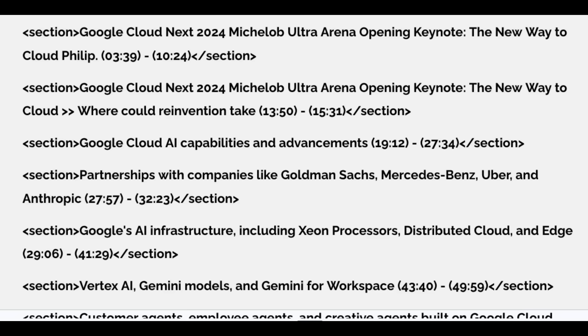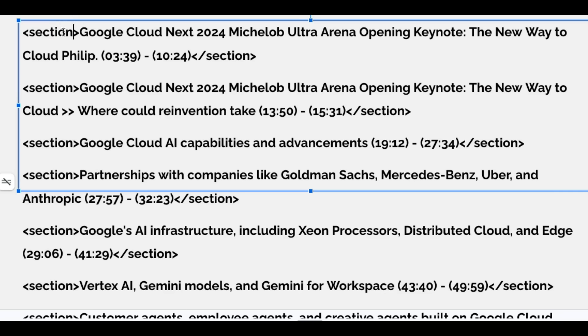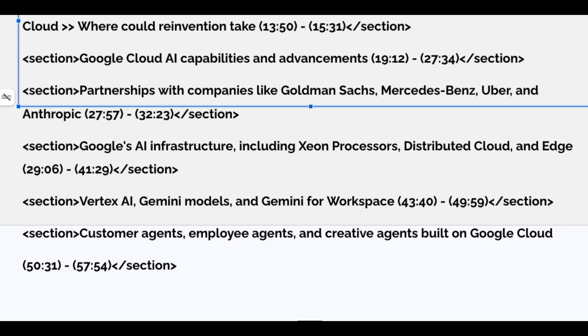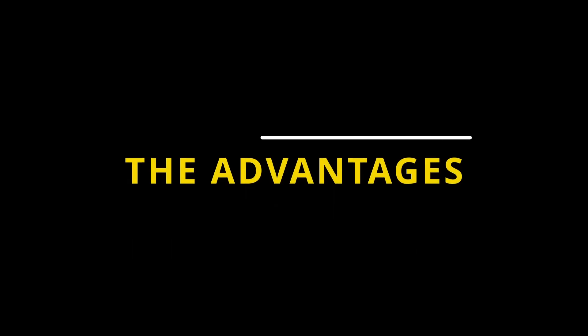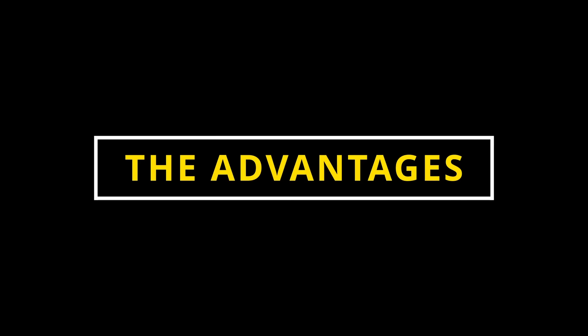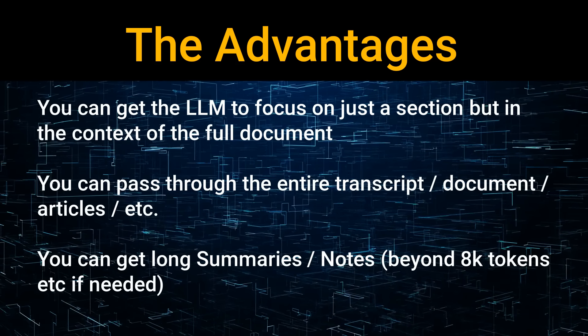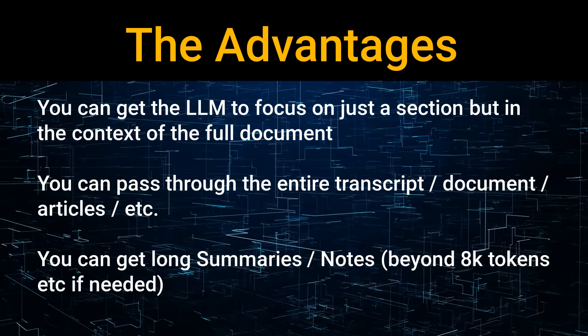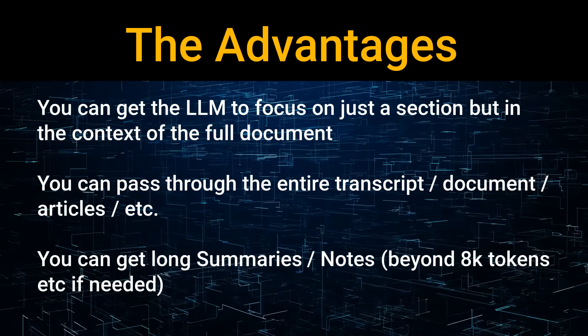Here's an example of some of the sectioning that comes out, where I'm getting it to return each section in an XML tag with the timestamp and a whole bunch of things. If you get your prompt right, you should get the sections for the entire thing. The advantages of doing this are that you can get an LLM to focus on just a section but in the context of the full document — a big advantage for getting better quality summaries. You can pass the entire transcript, document, or article in, and get longer sets of notes at the end that go way beyond the 8,000 token limit.